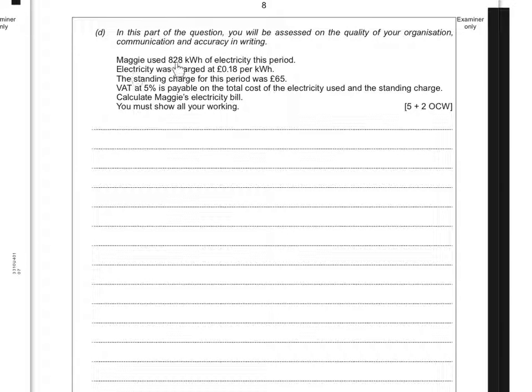For part D, we've been given a breakdown of some billing information. Maggie used 828 kilowatt hours of electricity. Electricity is charged at 18 pence per kilowatt hour, the standing charge for this period was £65, and VAT at 5% is payable on the total cost of the electricity used. It's a QCW question, so we need to make sure we lay everything out clearly, explain our workings, and include a little conclusion as well as showing all of our workings.